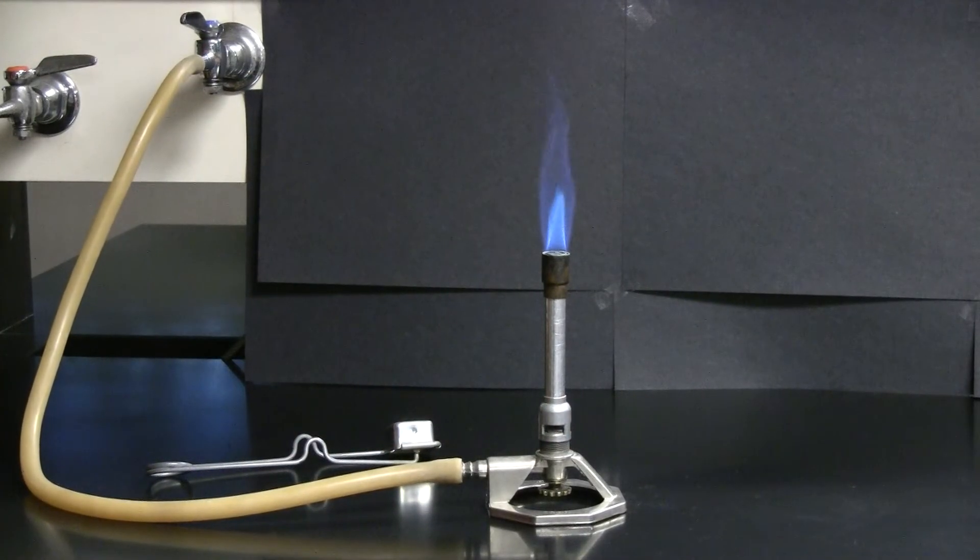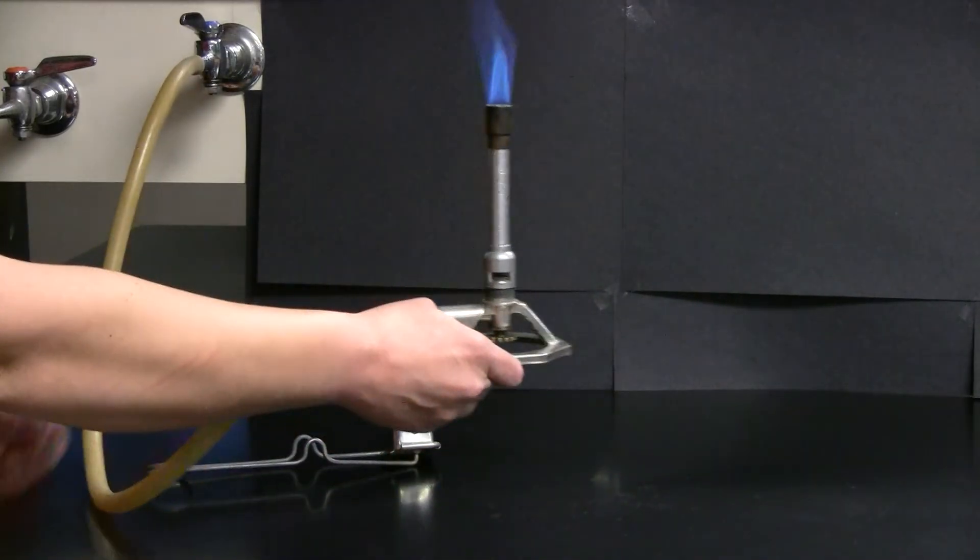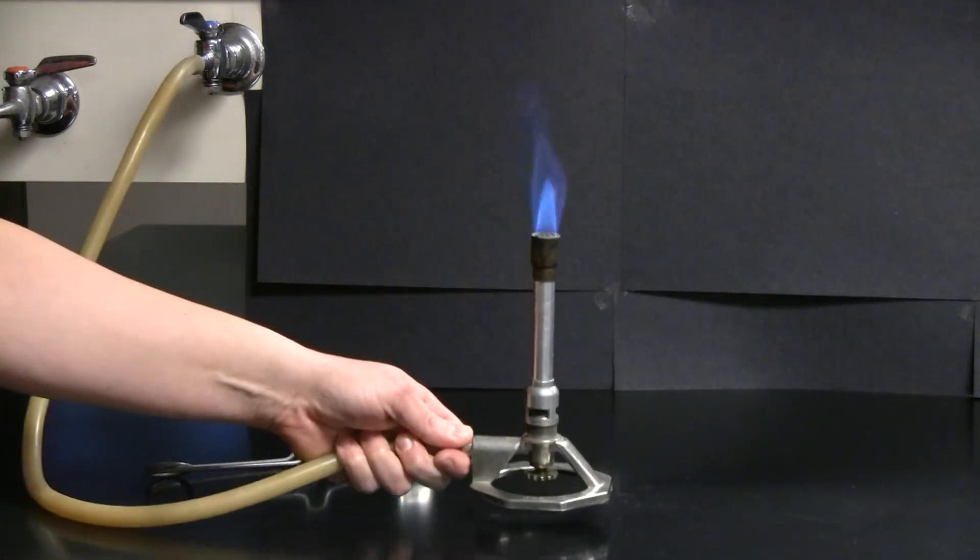When you handle the Bunsen burner once it's lit, you can always handle it from the bottom of the Bunsen burner, either by the hose or from the ring at the bottom. Those areas will stay cool.